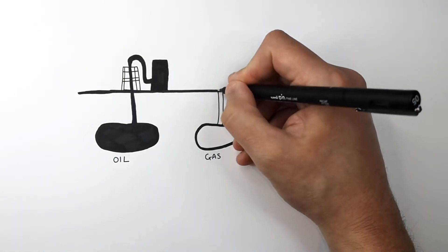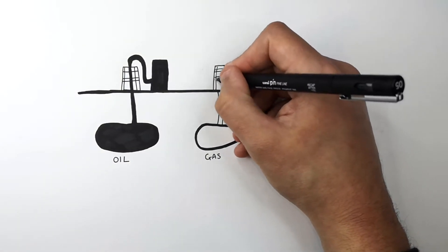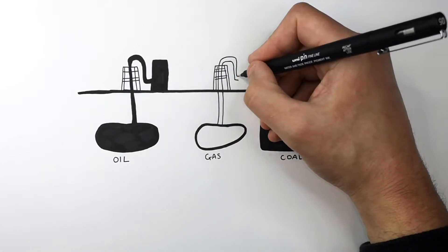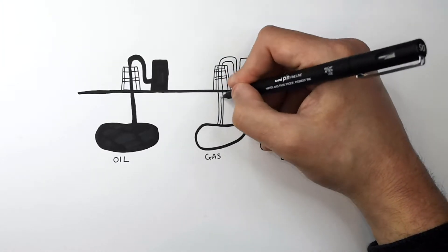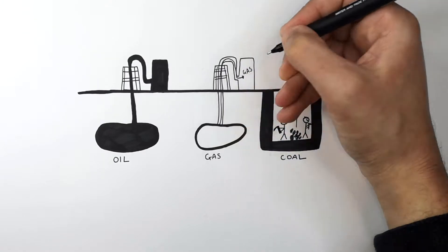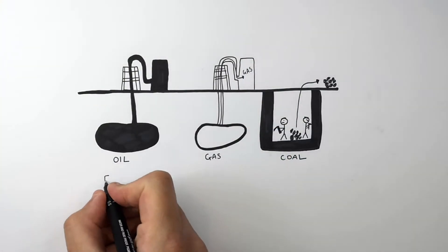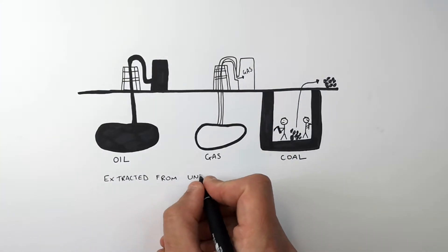Gas is also found underground and gas is extracted in a similar way to oil whereby you drill for the gas and then extract it and store it in very large tanks. So to summarize, all three of them are extracted from underground.